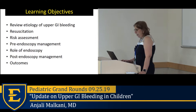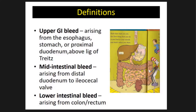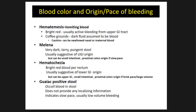Before we get started, let me review some definitions. An upper GI bleed arises from the esophagus, stomach, or proximal duodenum above the ligament of Treitz. A mid-intestinal bleed is anywhere from the ligament of Treitz down to the ileocecal valve. A lower GI bleed arises from the colon or rectum, beyond the ileocecal valve.